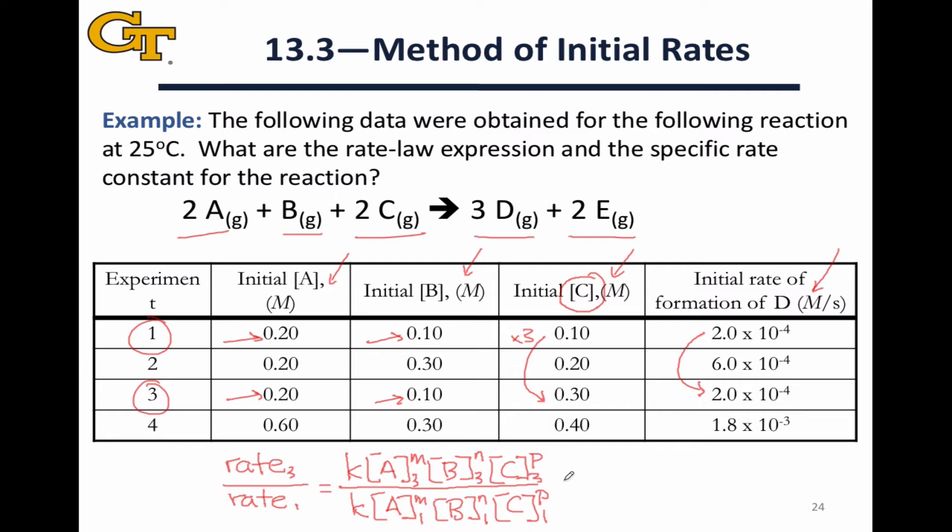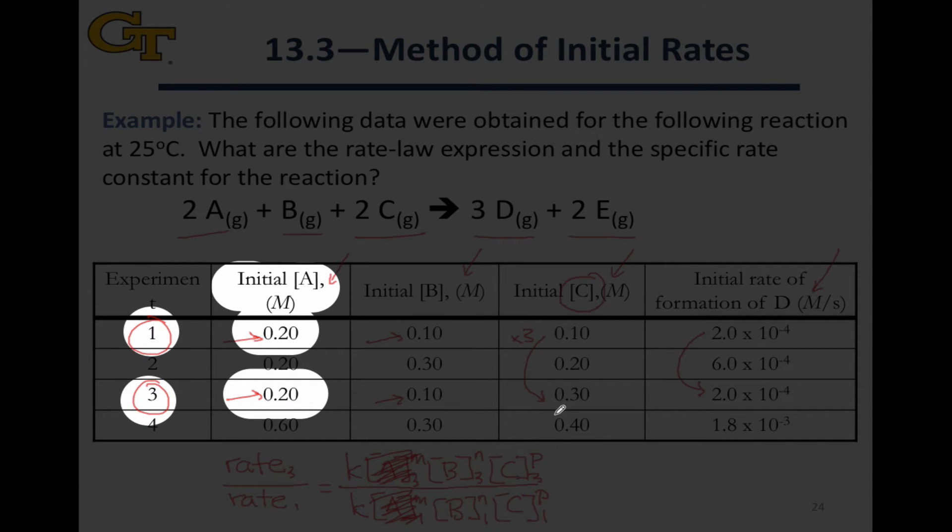Now we can start plugging in numbers, and one thing to realize right off the bat is since the concentration of A did not change across the runs, it will divide out. A to the M in trial 3 divided by A to the M in trial 1 is going to divide out to 1, since the molarity of A in trial 3 is equal to the molarity of A in trial 1.